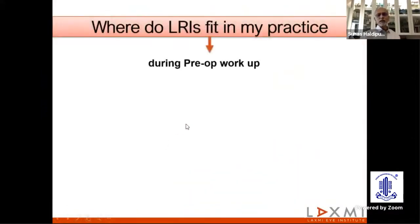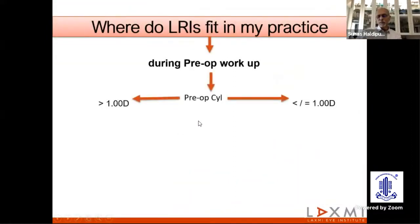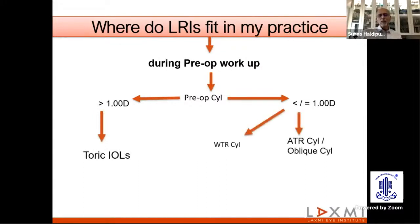Where do LRIs fit in my practice today? During pre-op workup, if the patient has a cylinder greater than one diopter, they go in for a toric lens — or if they can't afford toric, they'll go for an LRI. If the cylinder is one or less than one and it's with the rule, I would probably do nothing or do LRI. If it's against the rule or oblique cylinder, the obvious choice is either LRI or a toric lens.